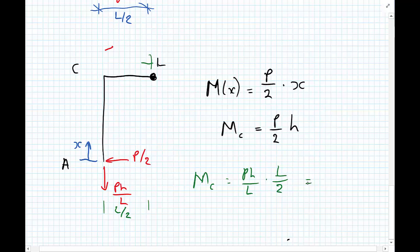So again, applying, going across the beam, we also get that we have P upon 2 multiplied by H. So the moment coming from the beam would be equal to the moment coming from the column to maintain equilibrium.